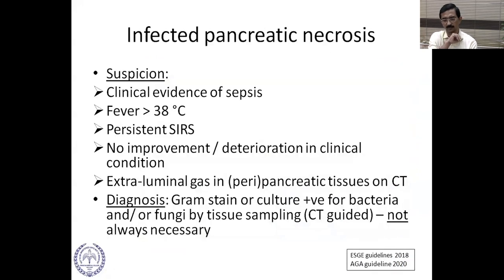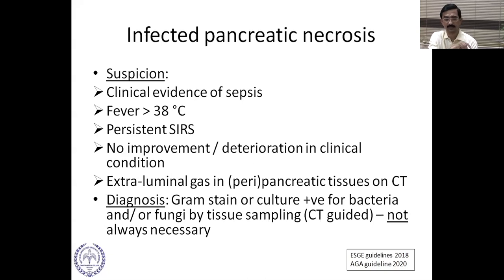Infected pancreatic necrosis is suspected when there is evidence of sepsis, fever more than 38°C, persistent SIRS, failure to improve or deterioration in clinical condition, or extra-luminal gas in the peripancreatic tissues on CT. Diagnosis is made on gram stain or culture positivity for bacteria and/or fungi by tissue sampling, usually CT-guided, though not always necessary. The advantage is that culture results can guide antibiotic usage.